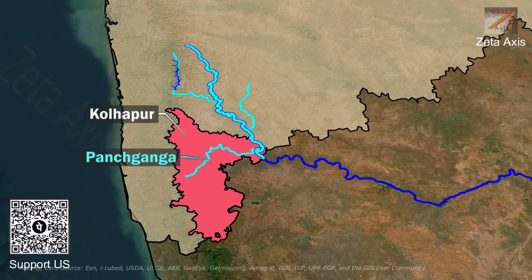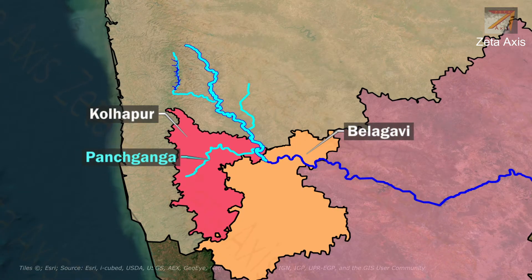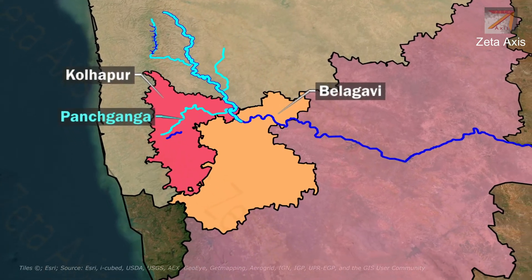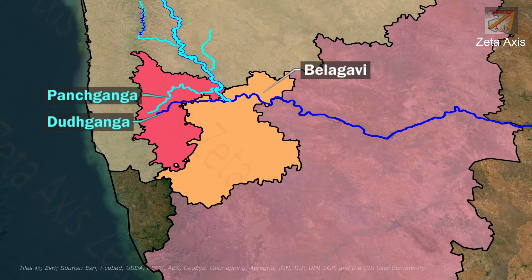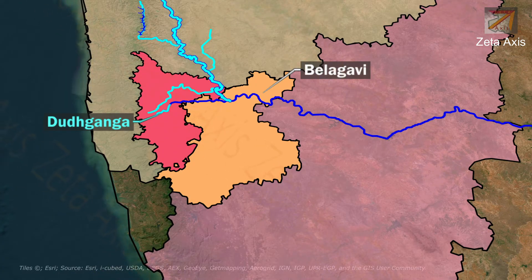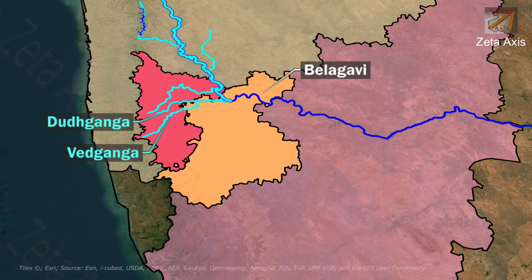From Kolhapur, the Krishna River crosses into Karnataka's Belgavi district. In Belgavi, the Dood Ganga River meets Krishna River. The Dood Ganga River originates in Kolhapur and flows towards Belgavi, where the Ved Ganga River joins the Dood Ganga River. After the confluence of these rivers, the combined stream joins the Krishna River within Belgavi district.